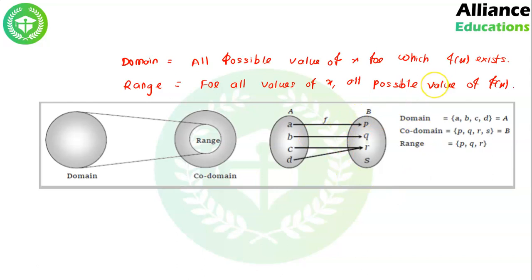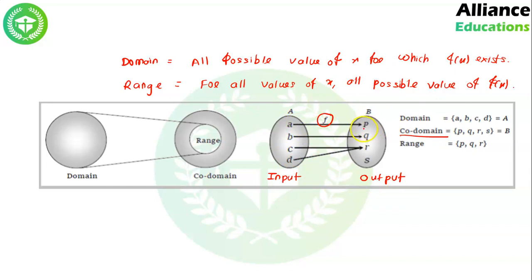Now, what is co-domain? Suppose a relation is given from set A to set B. All possible values of set A (all inputs) form the domain. All possible outputs that can be obtained form the co-domain — that is, all possible values of set B. But the values actually obtained after substituting inputs are called the range. So: domain values are inputted → range is obtained → and the set from which the range comes is called the co-domain.